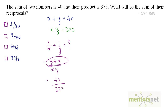So this equals 40 by 375. We can reduce this by dividing both numerator and denominator by 5: 5 eights are 40, and for 375 — 5 sevens are 35, what remains is 25, and 5 fives are 25 — giving 8 by 75. So the answer is option 2.